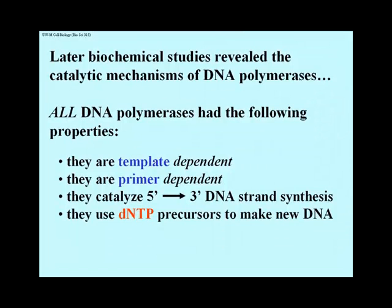Biochemists soon determined most of the catalytic mechanism of DNA polymerase, and most of these activities turn out to be the same for all DNA polymerases — not only the ones in E. coli, but those subsequently isolated from many different eukaryotic as well as prokaryotic cells. All DNA polymerases require a DNA template and cannot start new strand synthesis without one. All DNA polymerases also require a primer — a short pre-existing strand on which to add new nucleotides — and all known DNA polymerases cannot begin a new DNA strand from a single nucleotide. All DNA polymerases build new DNA from deoxynucleotide triphosphate precursors.